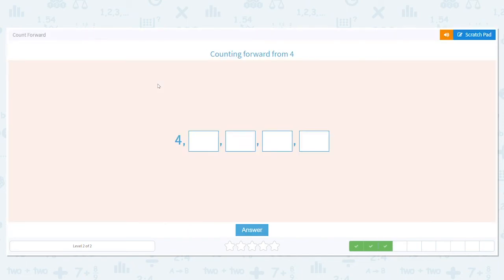Next, we're counting on from four. What comes after four? Five, then six, then seven, then eight. Good job.